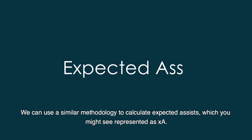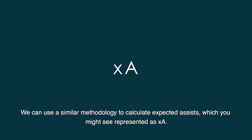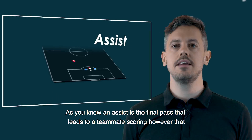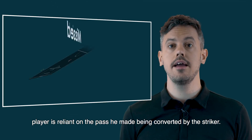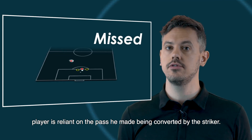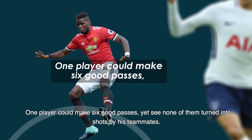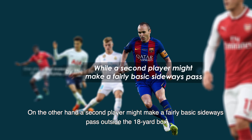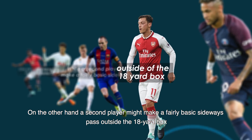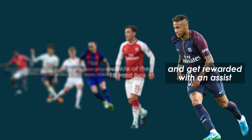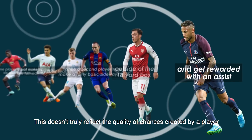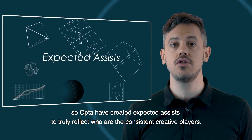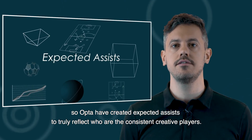As you know, an assist is the final pass that leads to a teammate scoring. However, that player is reliant on the pass he made being converted by the striker. One player could make six good passes yet see none of them turn into shots by his teammates. On the other hand, a second player might make a fairly basic sideways pass outside of the 18-yard box and get rewarded for creating a goal-scoring opportunity. This doesn't truly reflect the quality of chances created, so Opta have created expected assists to truly reflect who the consistent creative players are.